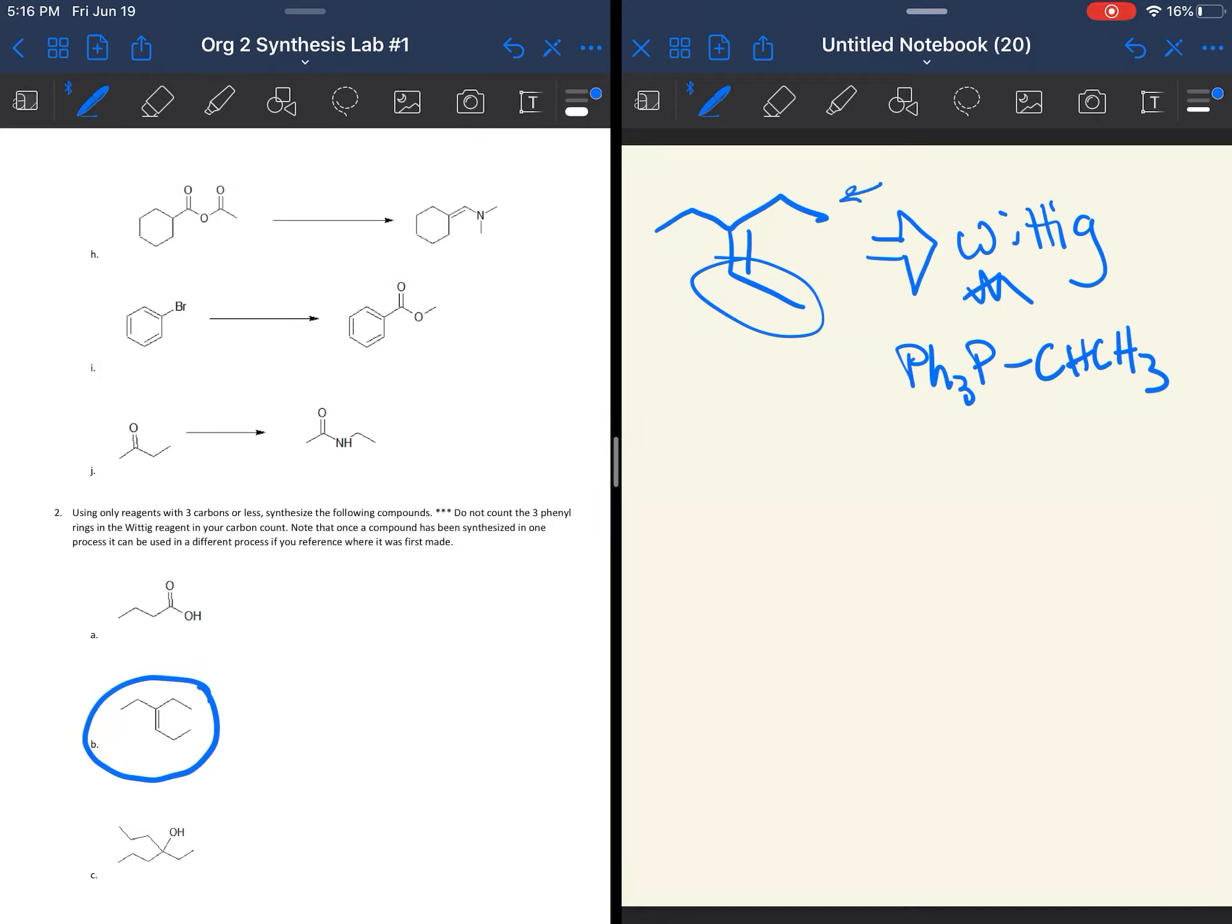But this side, if you wanted to make that the Wittig reagent, you're going to have to show me how to make it because the rules, please read the rules. Using only reagents with three carbons or less to build your organic molecule. The only carbons you don't have to count would be the three phenyl rings in the Wittig reagent. So you don't have to worry about those, but anything else you're going to have to make. So what I want to do is I think the Wittig is a great way to go with this. So what I'm going to go a little bit backwards and say is I need to make this so I can use a Wittig reagent that only has two additional carbons in it. But that means I need to make this five carbon piece.